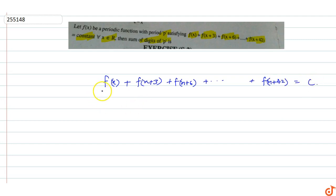Now replace x with x+3. To find the period, we need f(x) equals f(x+T). To convert this, we replace x with x+3.